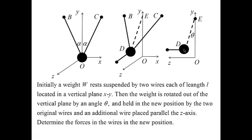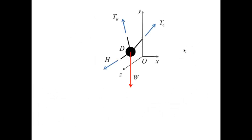Our task is to determine the forces in the wires in the new position. The free body diagram for the weight involves four forces: the weight, the tension in the additional horizontal wire, and the tensions in the wires Tb and Tc. The equilibrium equation is written in vector form. The forces H and W have well-defined directions. H is along positive z, so I use the vector k, and W is along negative j. To quantify this equation, we need to determine the vectors Tb and Tc.